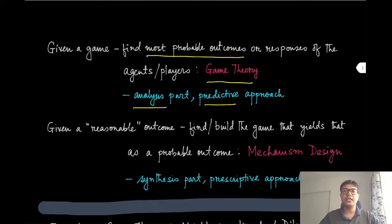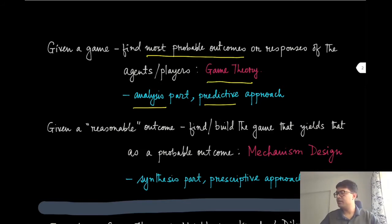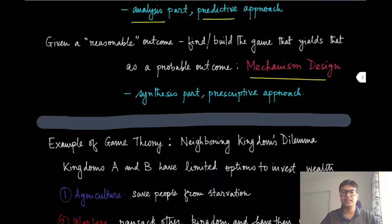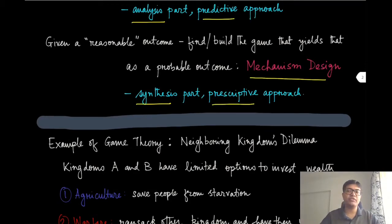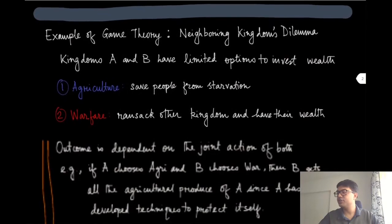If we take the inverse approach — where we want a specific reasonable outcome and want to find or build the game that yields those desirable outcomes as the probable outcomes — that is what we call mechanism design. This is naturally the synthesis part, as already discussed with classical engineering examples, and the approach will be prescriptive: we give a specific prescription for how you should design this game to get those reasonable outcomes.